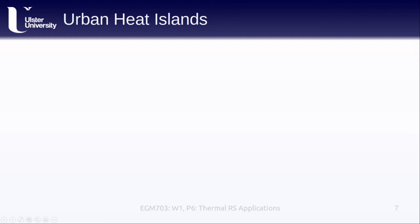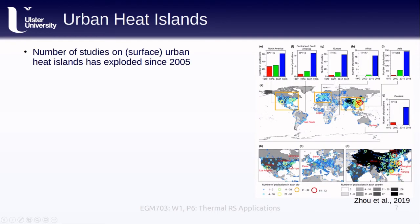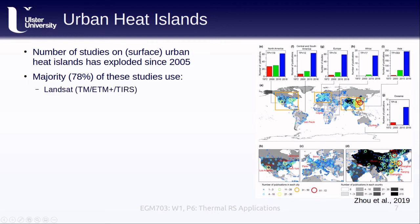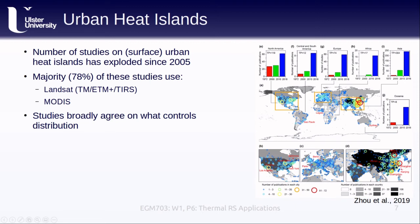A 2019 review paper on urban heat islands found that since 2005, the number of studies has positively exploded, especially for cities in Asia—increasing from only a few papers published between 1972 and 2000 to over 200 published between 2010 and 2018. The majority of these studies use freely available data, including Landsat images from a variety of sensors or MODIS images. These studies have broadly agreed on what controls the distribution of urban heat islands, including impervious surface area, albedo, vegetation cover, landscape cover, and climate.